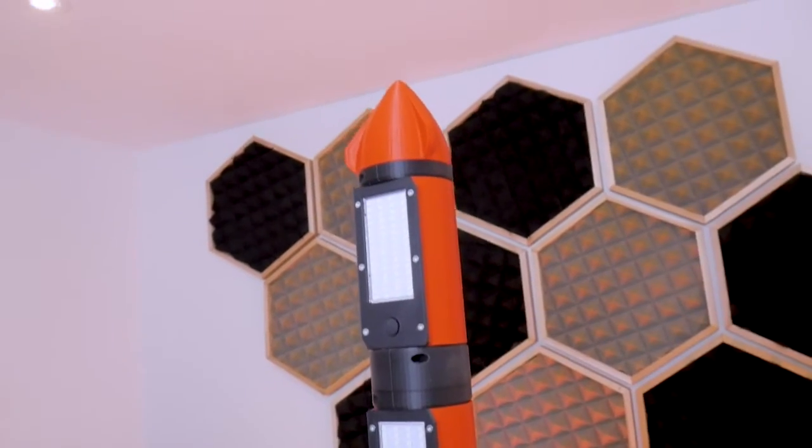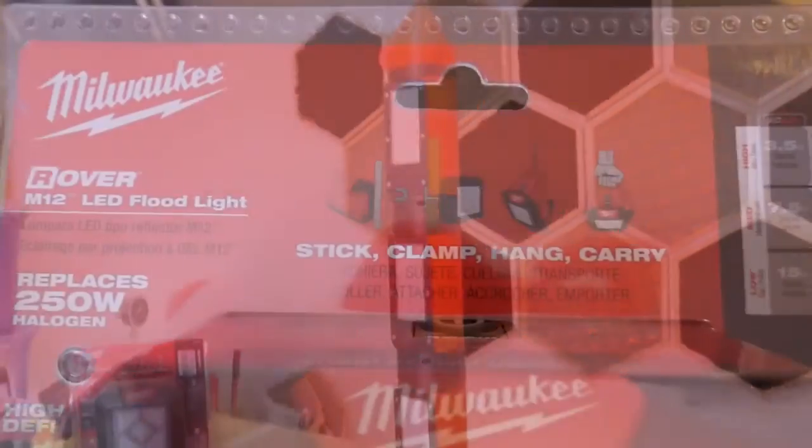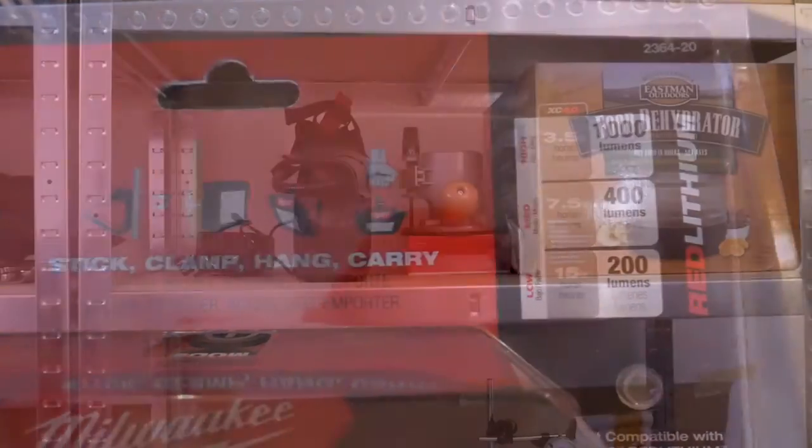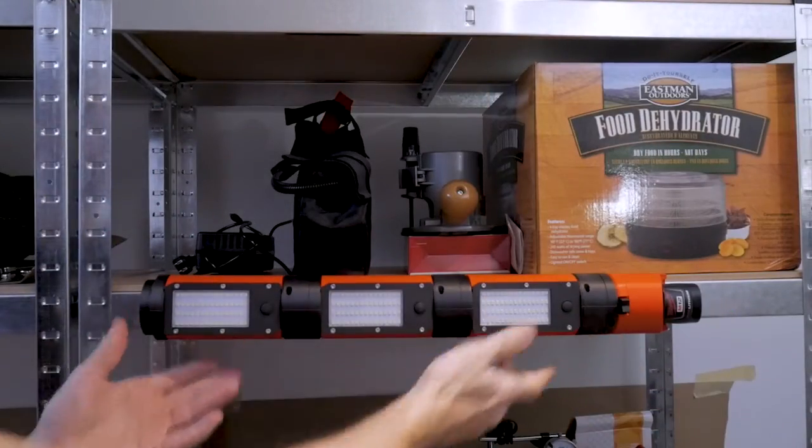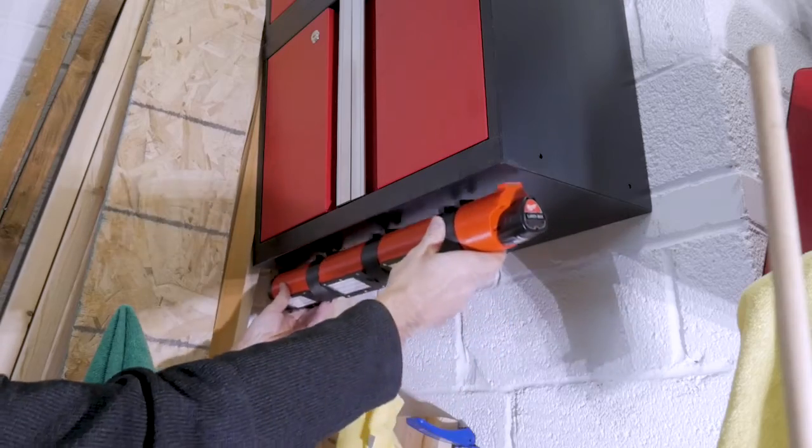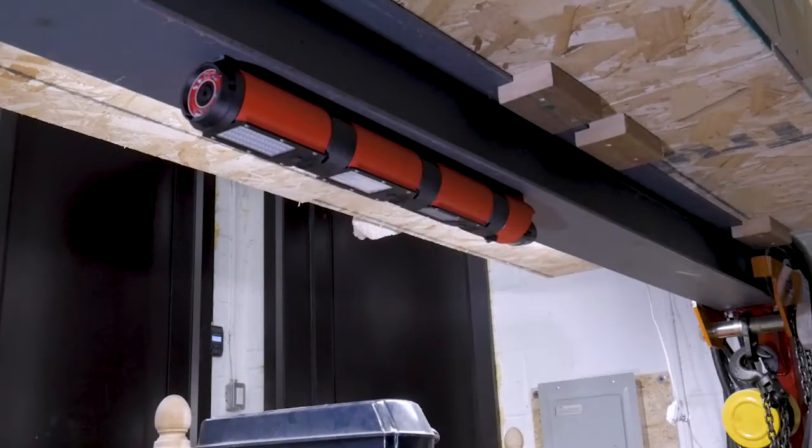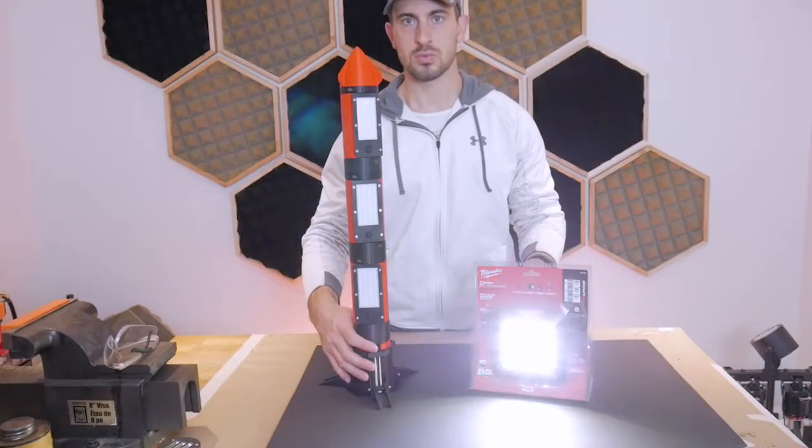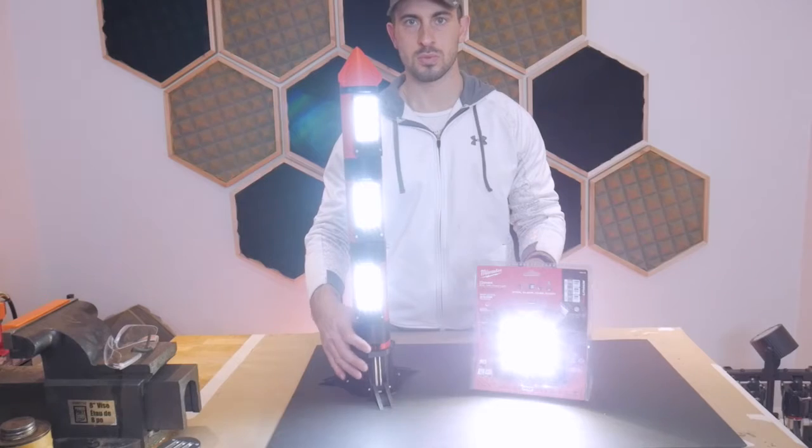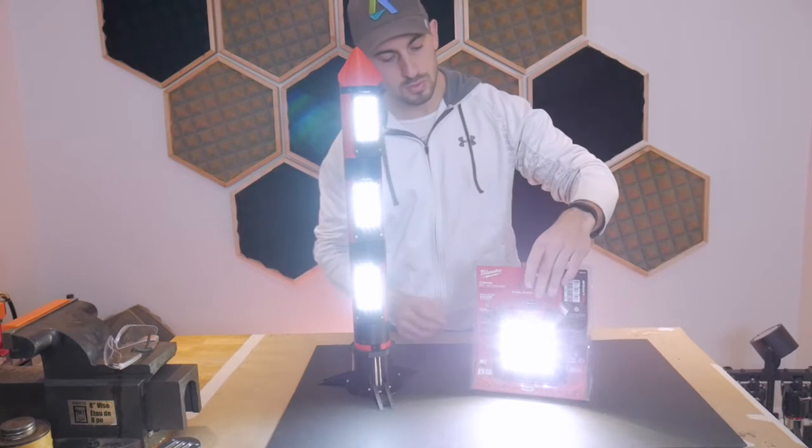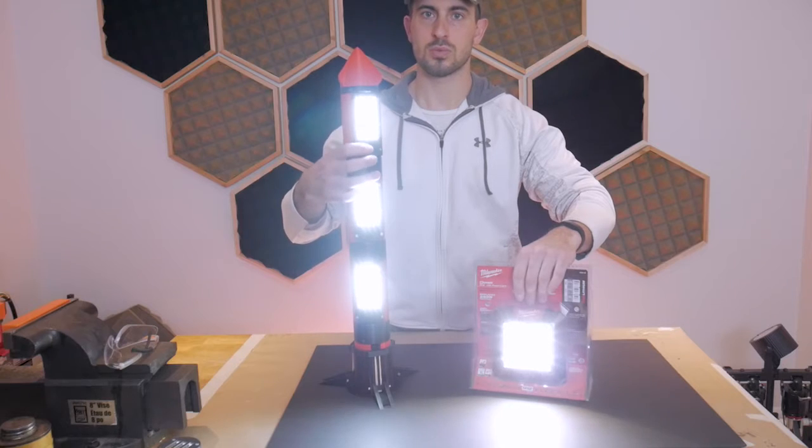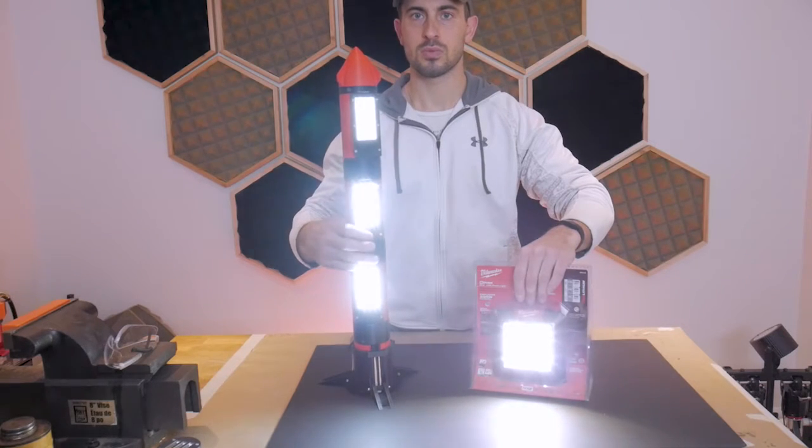Overall versatility was the next comparison. The Milwaukee light can stick to things magnetically, clamp onto things, and it can be carried with its handle. In comparison, the light that I built can also stick to things magnetically, but it cannot be clamped to things in its current state—I could design something later to make an attachment for that—and it can easily be carried around. So I say that's about even.